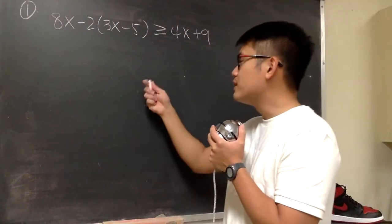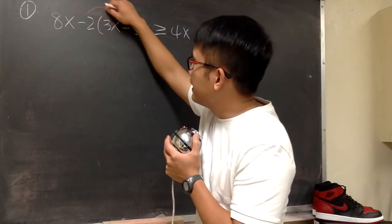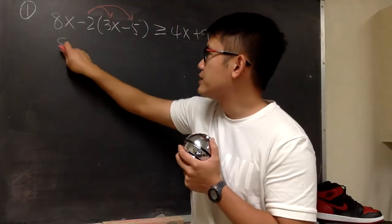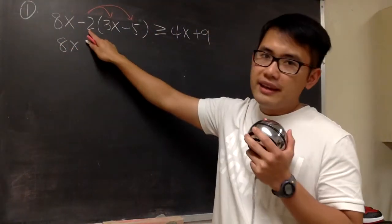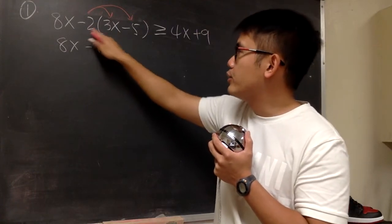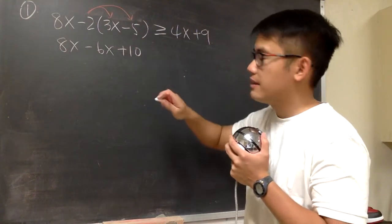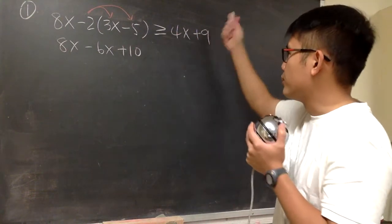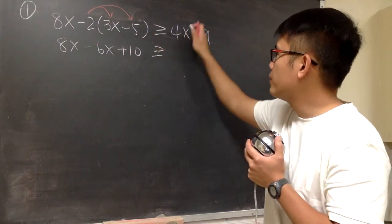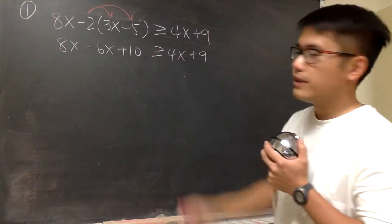To start off, we are going to take care of the parentheses first. Distribute the negative 2 into the parentheses. The 8x will stay the same for now. Negative 2 times 3x is negative 6x. Negative 2 times negative 5 gives us plus 10. The right-hand side stays the same: greater than or equal to 4x plus 9.